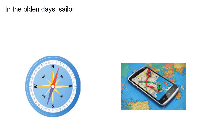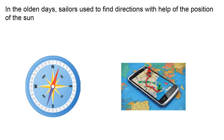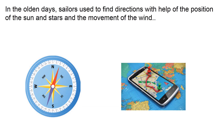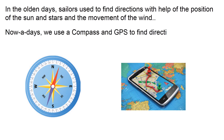In the olden days, sailors used to find directions with the help of the position of the sun and stars, and the movement of the wind. But nowadays, we use a compass and GPS to find directions. In the latest technology, we can use GPS system.